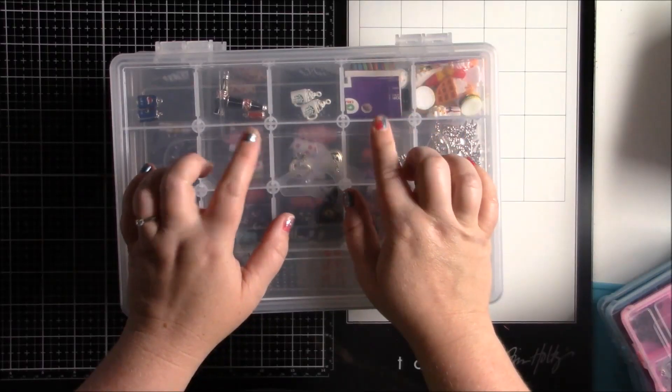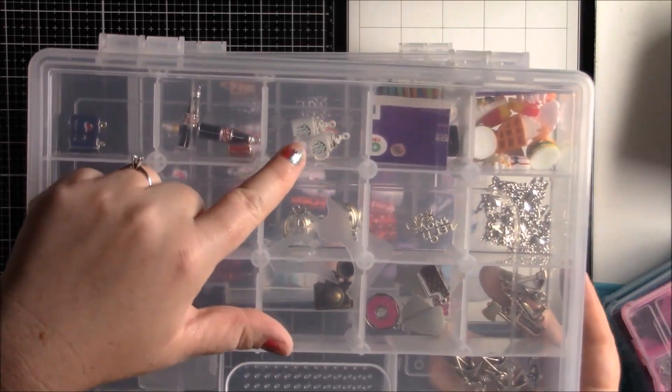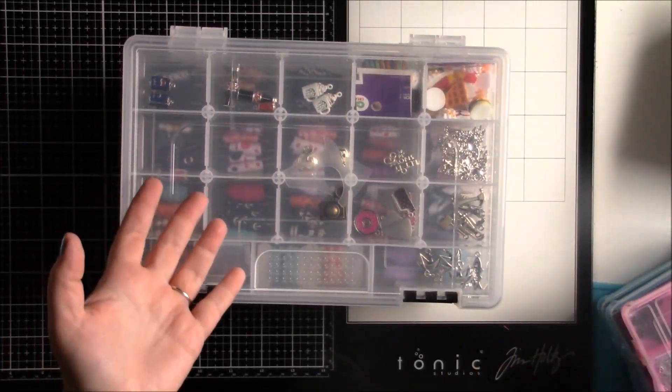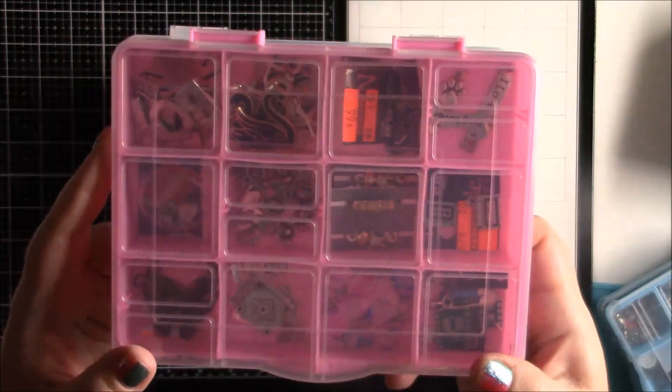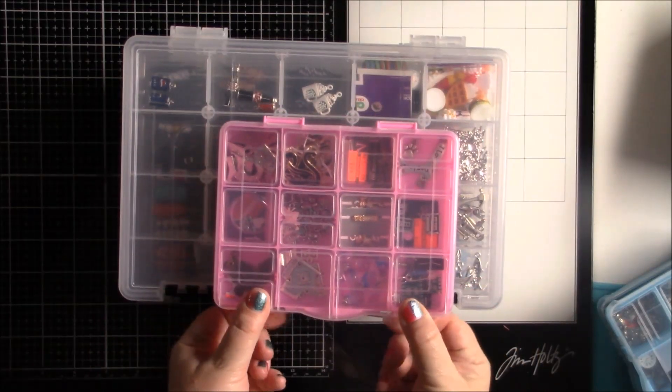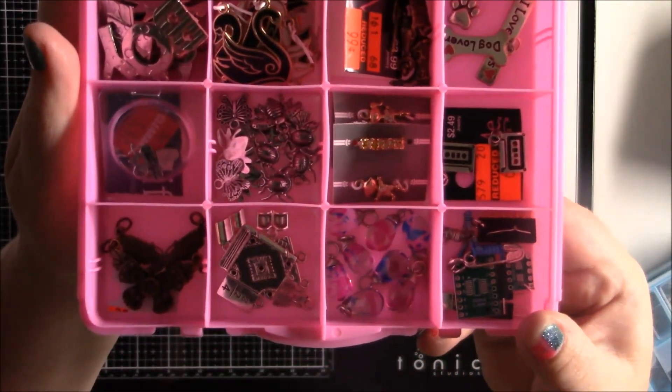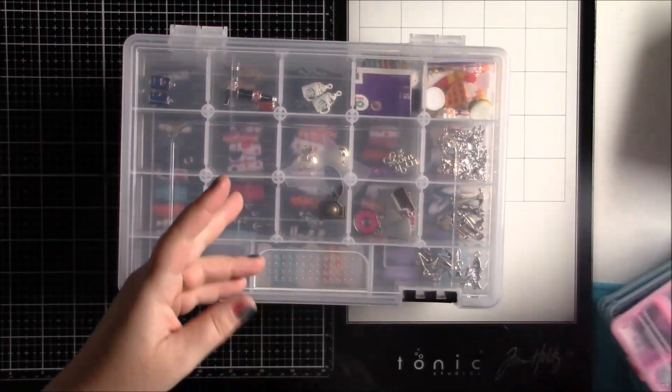I wanted to go ahead and organize it with the rest of my ribbon. So I went ahead and I took my charms and I took them from these, because some of these charms, as you can see, they don't even take up a whole compartment. So it's kind of wasteful storage. So I use these Dollar Tree compartments for all of my charms, and they fit perfectly in here.